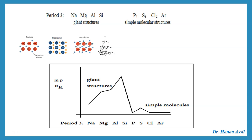Moving on to the next groups — phosphorus, sulfur, chlorine, and argon — these are simple molecular structures with weak attraction forces between molecules. Why is there a slight rise in melting point from phosphorus to sulfur? Phosphorus is a molecule made up of four atoms, but sulfur is a molecule made up of eight atoms. More electrons in the molecule means stronger intermolecular forces, which we refer to as van der Waals forces. Chlorine is diatomic and argon is monatomic, so all of these have low melting points.